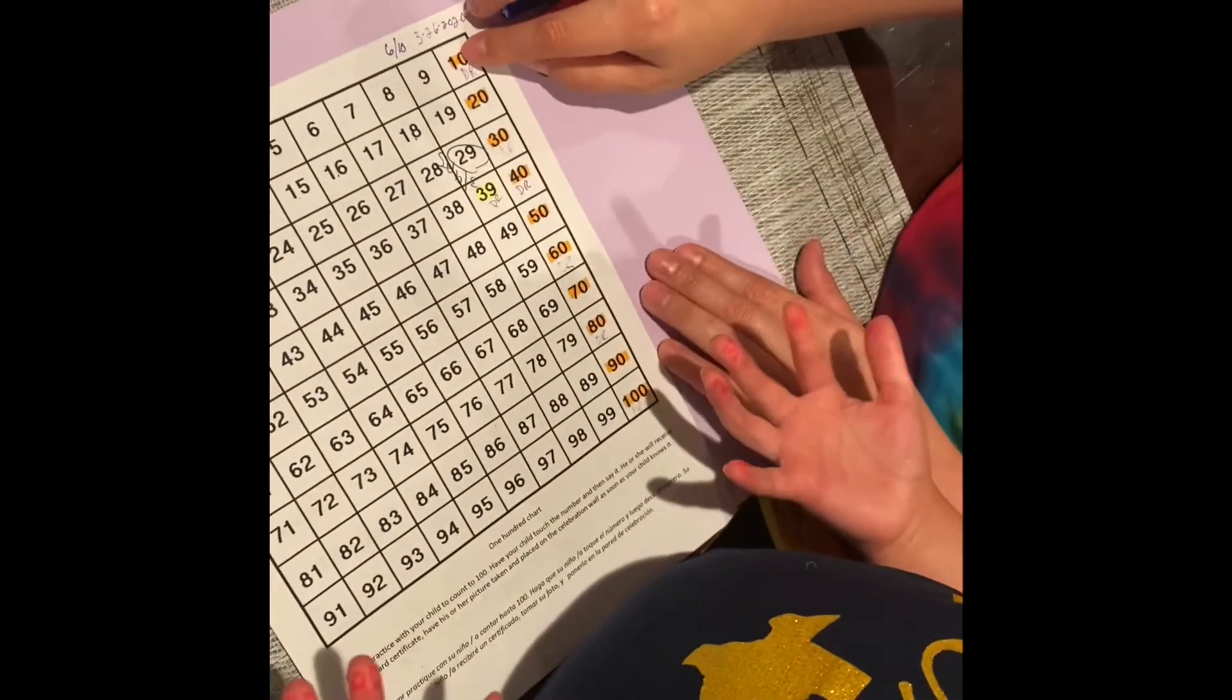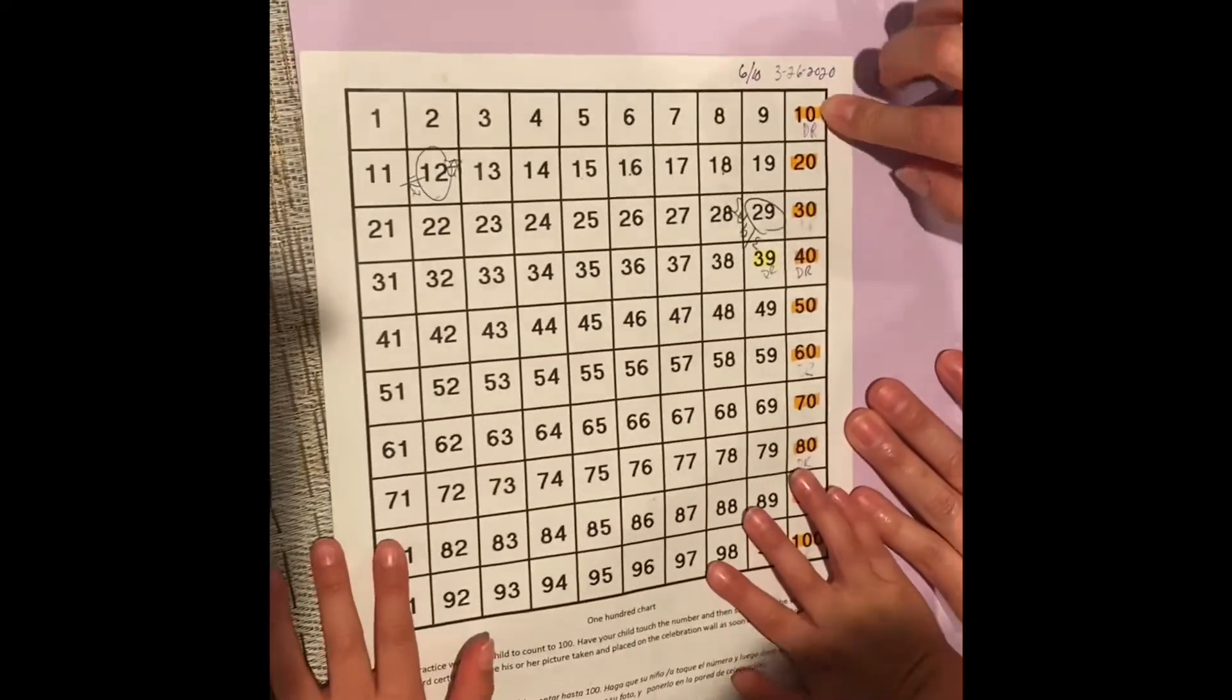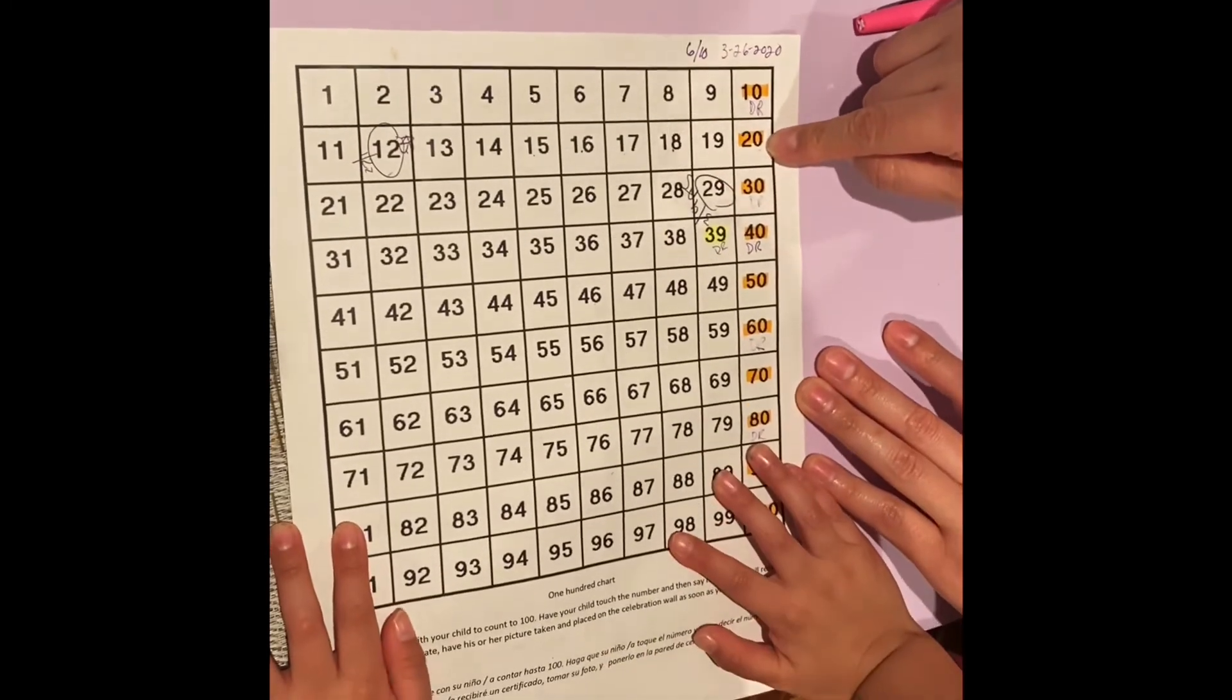Now let's say them again right here. Only the ones that are in orange, the 10s. We're going to count by 10s. Ready? 10. 20.